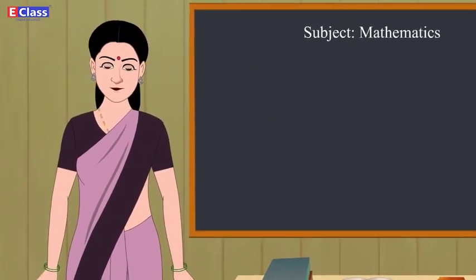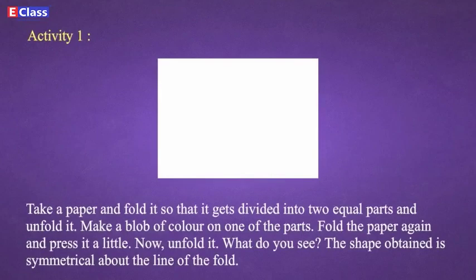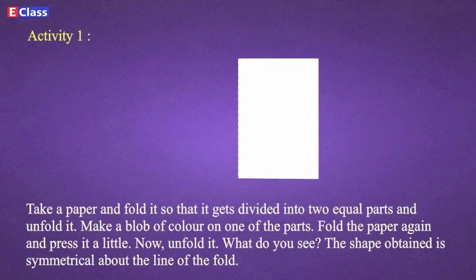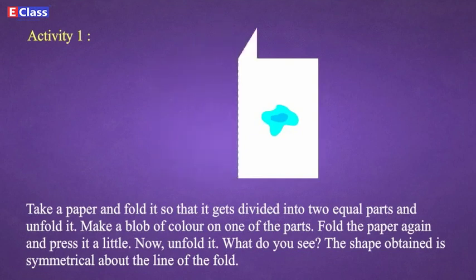Students, let's do some activities to understand symmetry. Try this. Activity 1: Take a paper and fold it so that it gets divided into two equal parts and unfold it. Make a blob of color on one of the parts. Fold the paper again and press it a little.